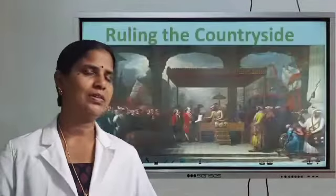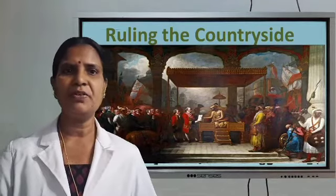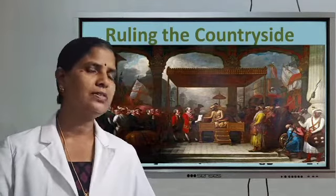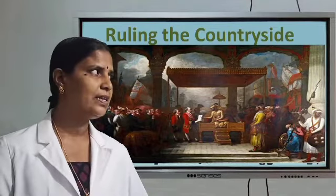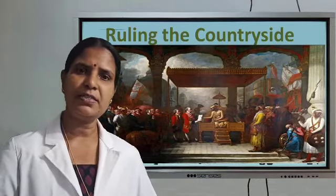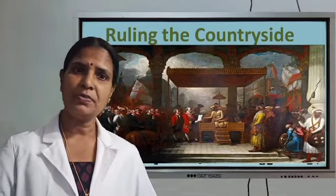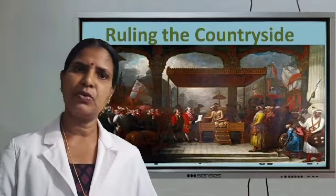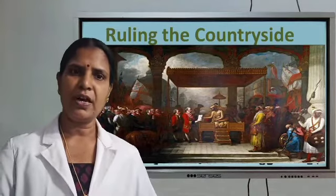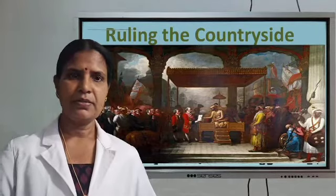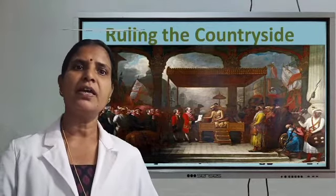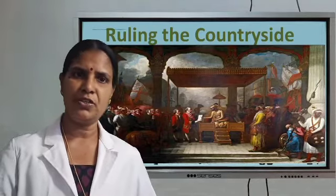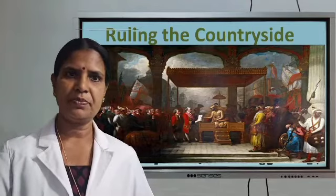Now we can continue our lesson on ruling the countryside. Do you remember where we stopped last class? Last class, we discussed how the East India Company expanded their cultivation. First, they collected revenue from India and gradually expanded their cultivation, especially the crops they needed — the opium and indigo. In some areas they forced the peasants to cultivate sugarcane, jute, rice, etc. But in the 18th century, they faced a lack of sufficient indigo because other countries — especially West Indies and America — stopped the supply of indigo.